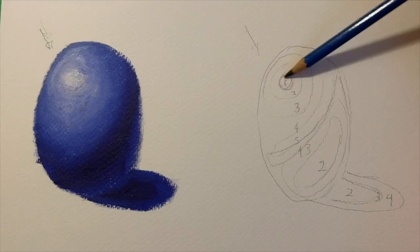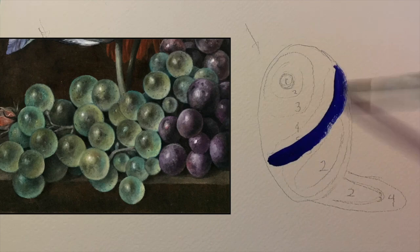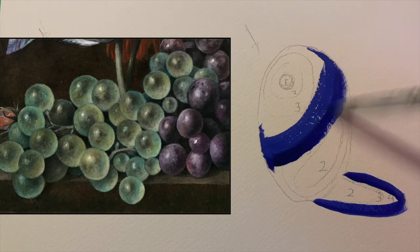So you'll see in the same five tone system, one is the highest and five is the darkest. You'll see that the second tone, two, will be at the bottom and also reflected in the shadow.